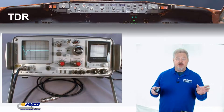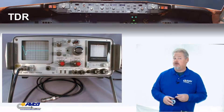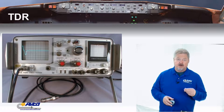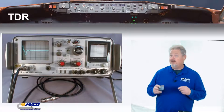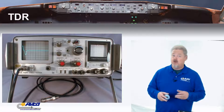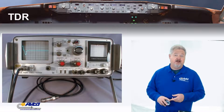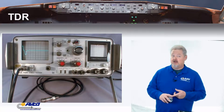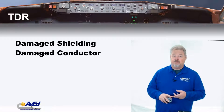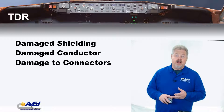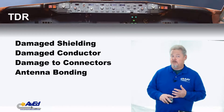A Time Domain Reflectometer is designed to find anomalies in any two-pair wire conductor. This could be a coax cable, or it could be a twisted shielded wire. As long as both conductors are evenly spaced, a TDR can be used to find faults — faults in shielding, openings or breaks, failures of connectors or cannon plugs, and high impedance at antennas.